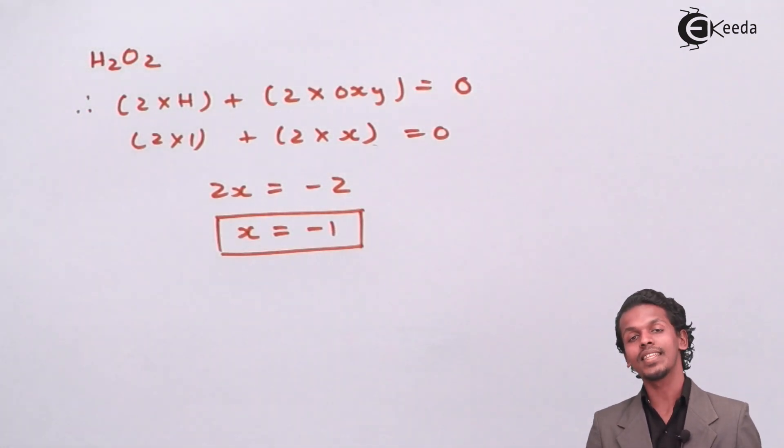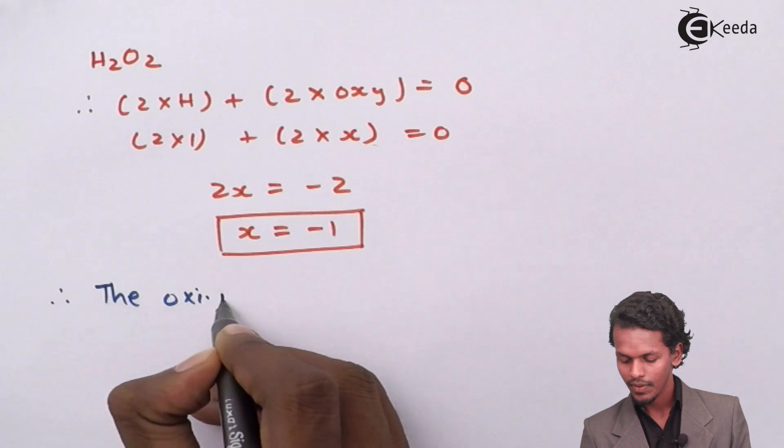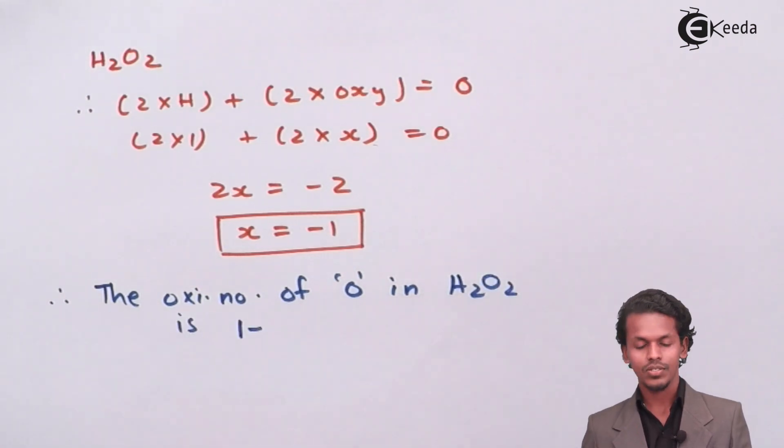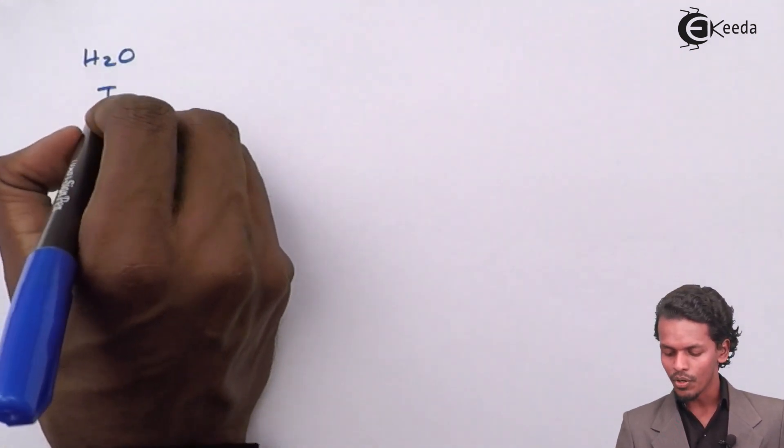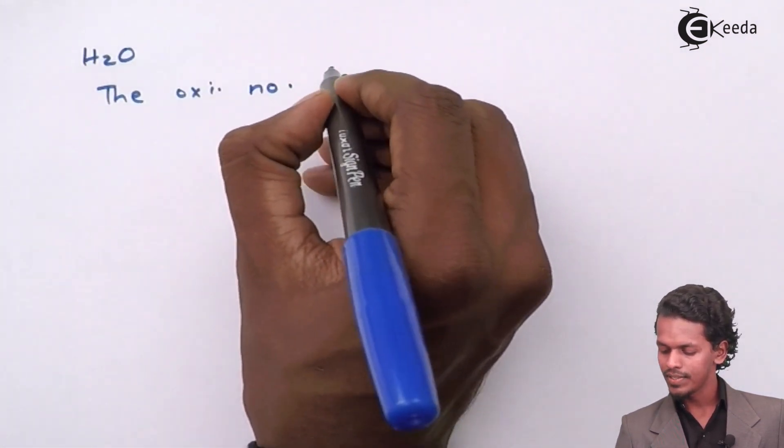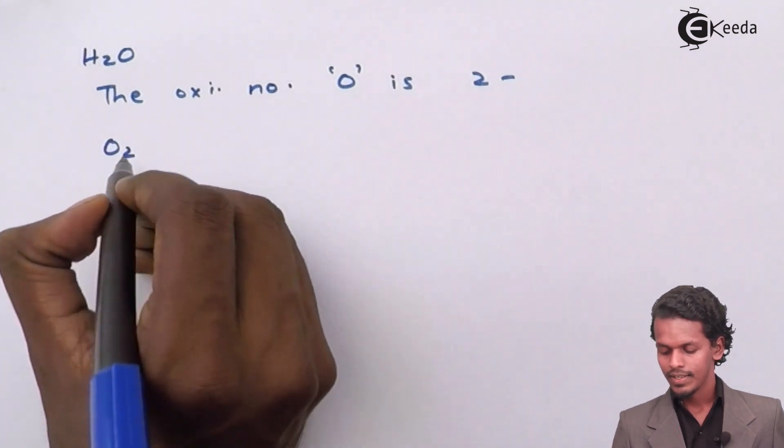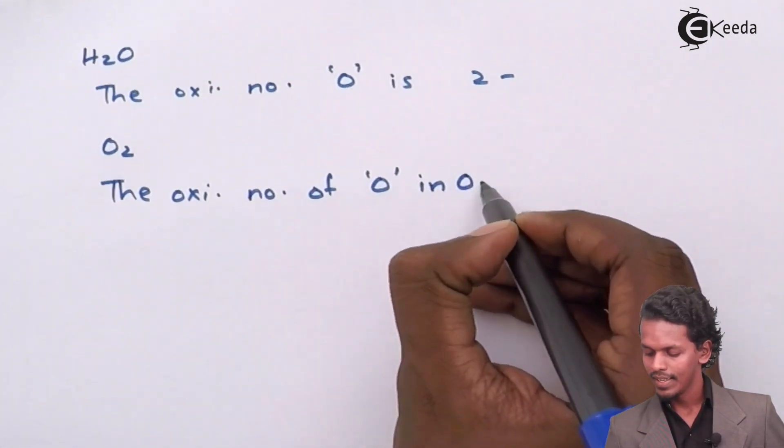So the oxidation number of oxygen in H2O2 molecule is minus 1. But in case of products that we got, we have H2O and in this format, the oxidation number of oxygen is always minus 2. We also got another product like O2. The oxidation number of oxygen in O2 is 0.